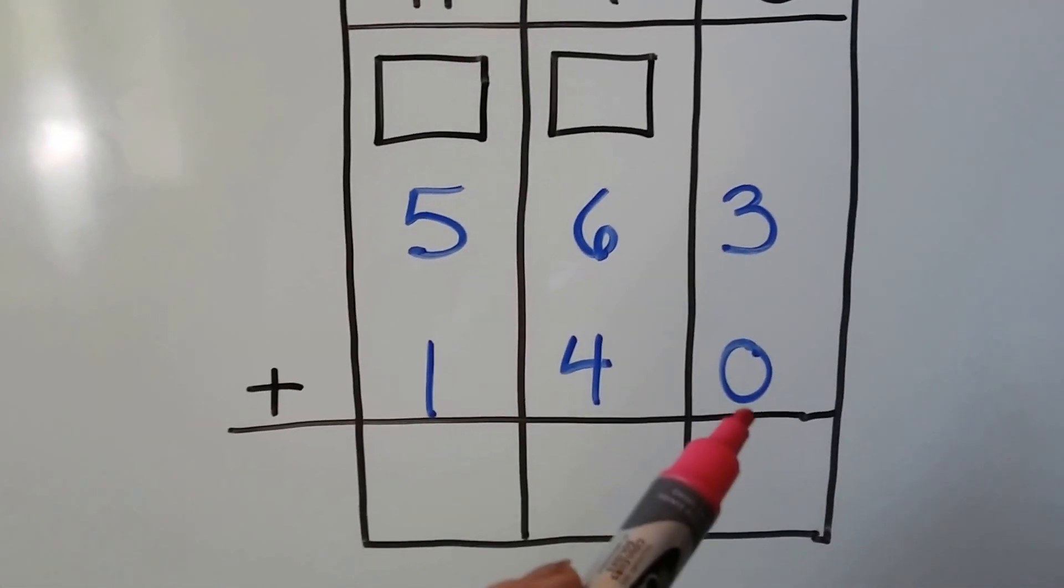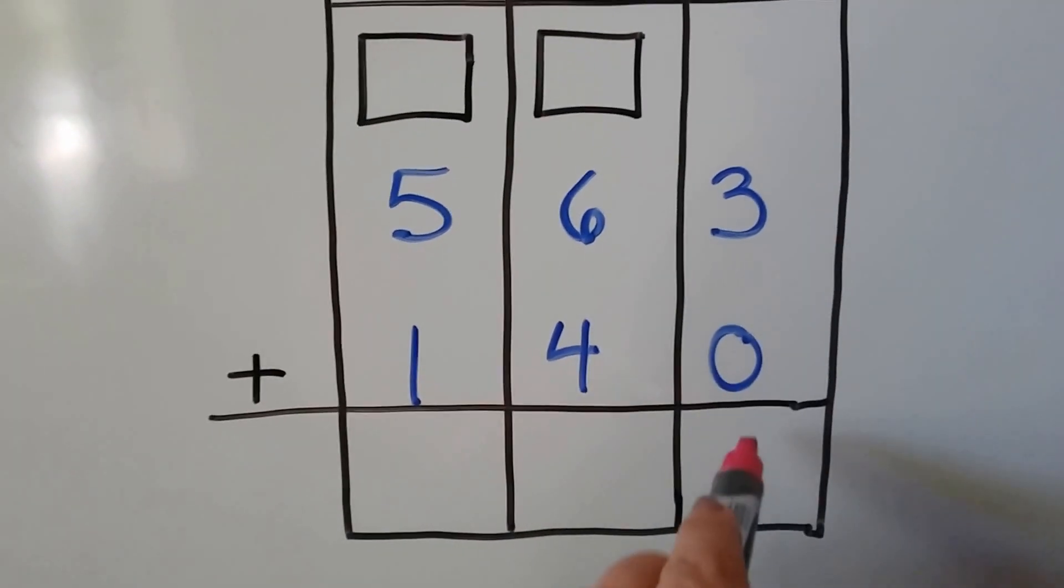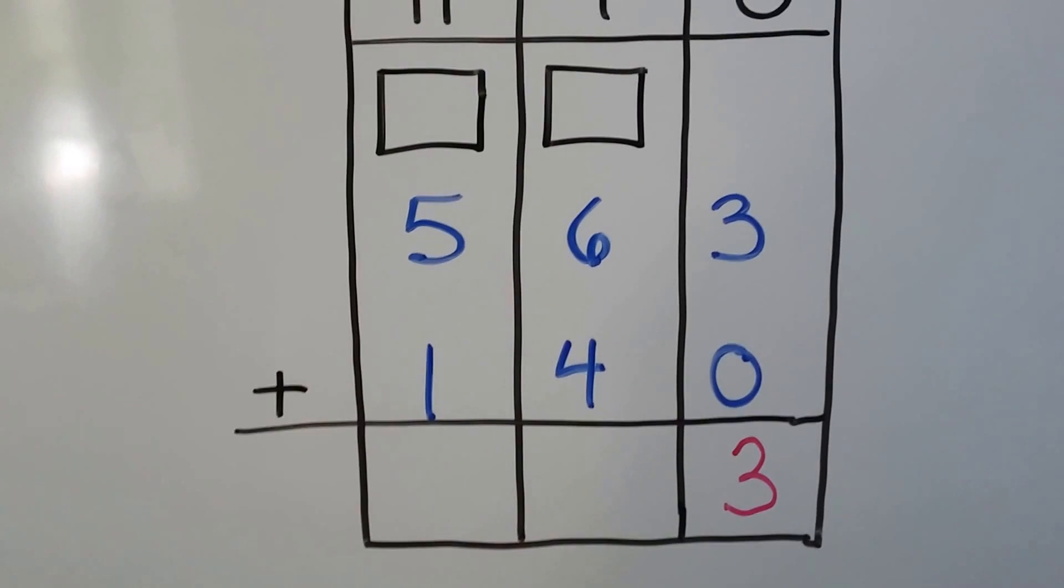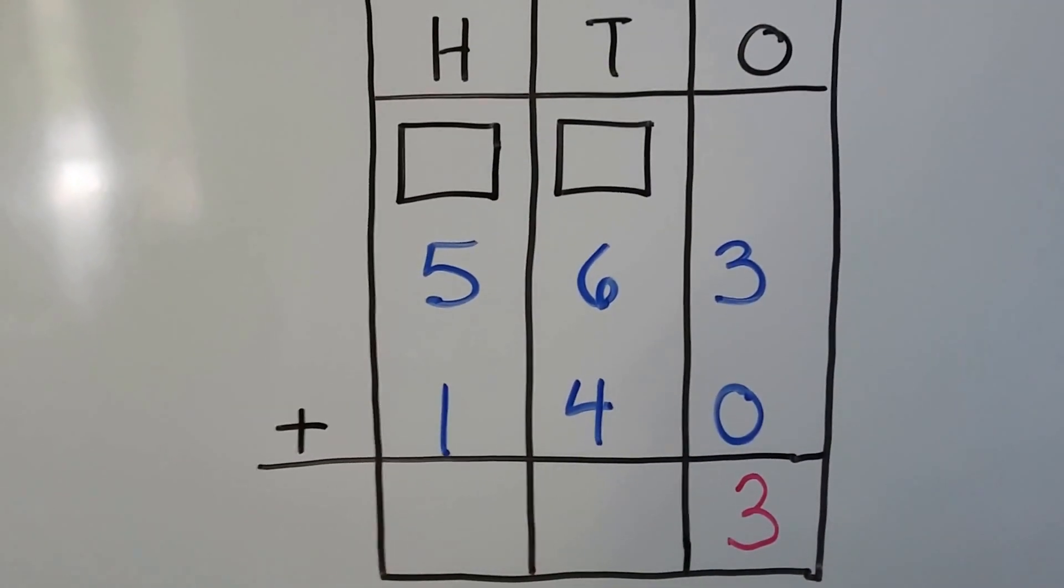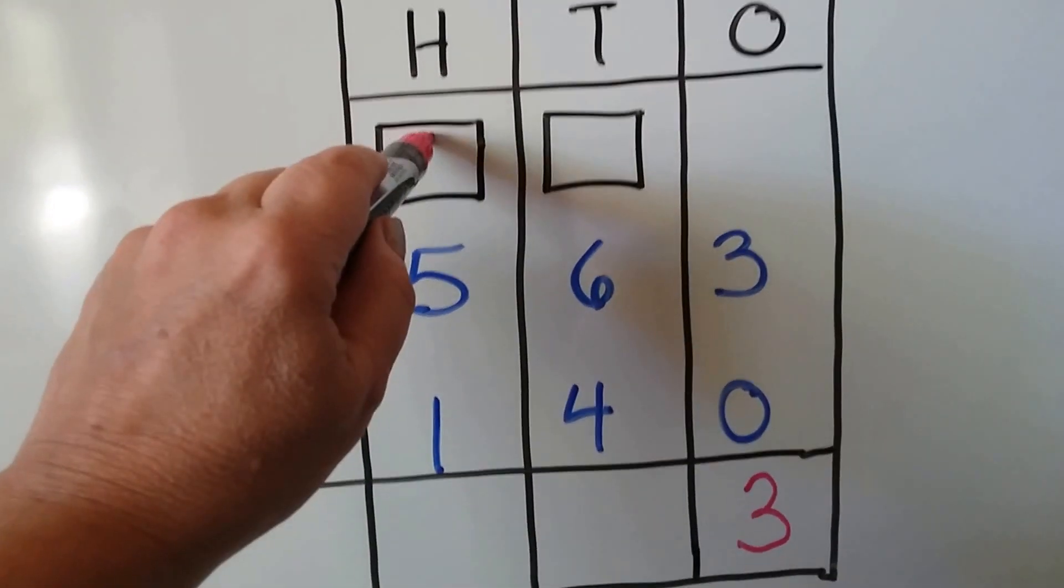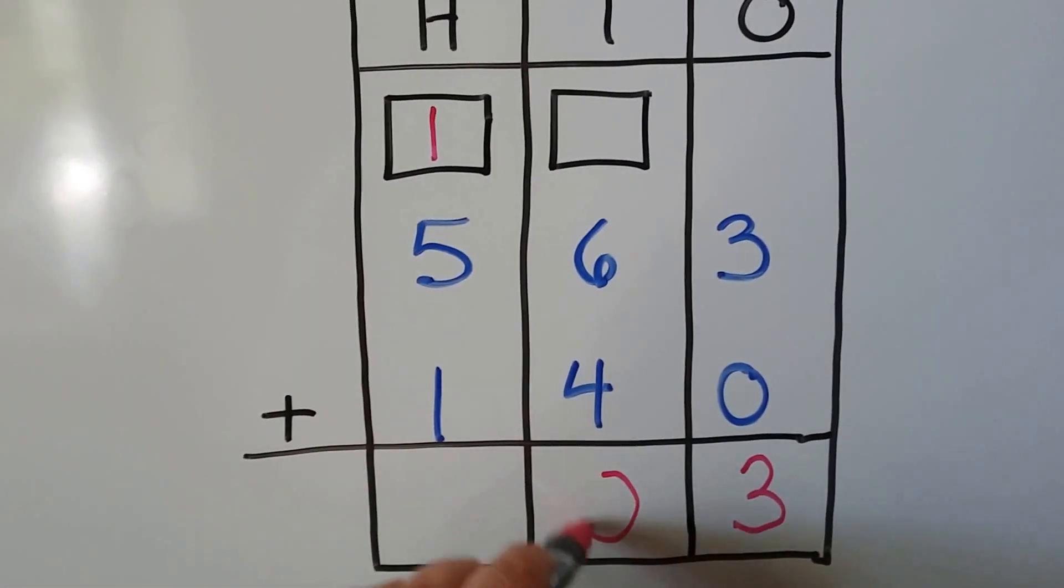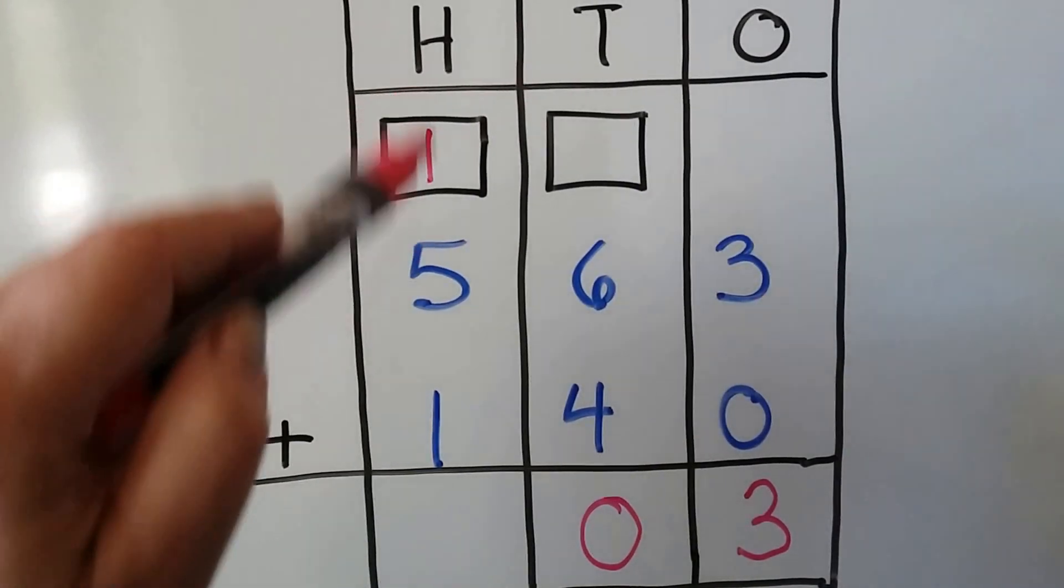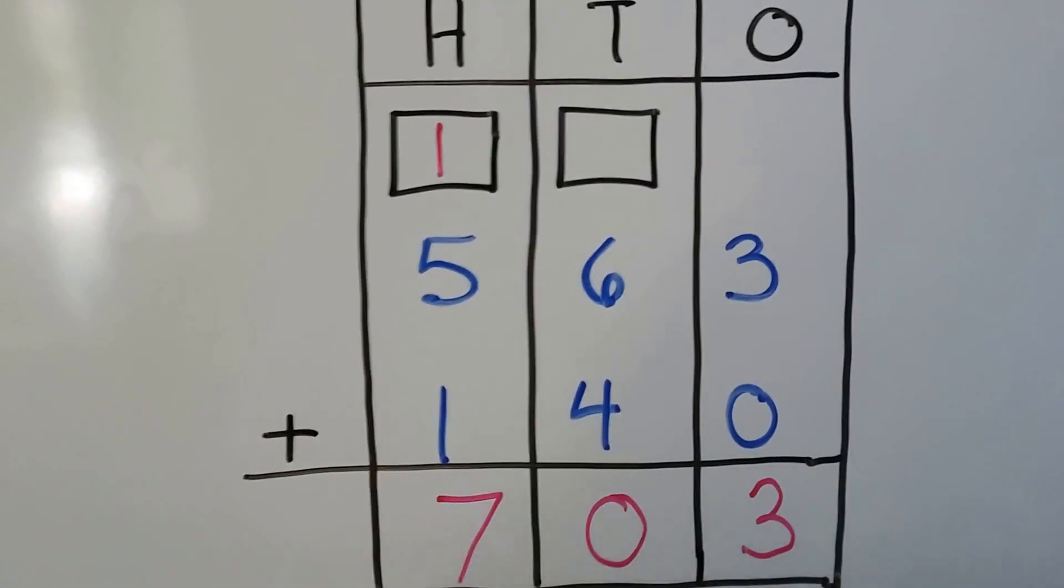We have three and zero. Well, that makes a three because we're not adding anything to the three. We're adding none to it, right? We have a six plus four. Well, that's a ten. So we regroup. Put the one up there, the zero down there. Now we add the hundreds. Five, six, seven. We have 703.